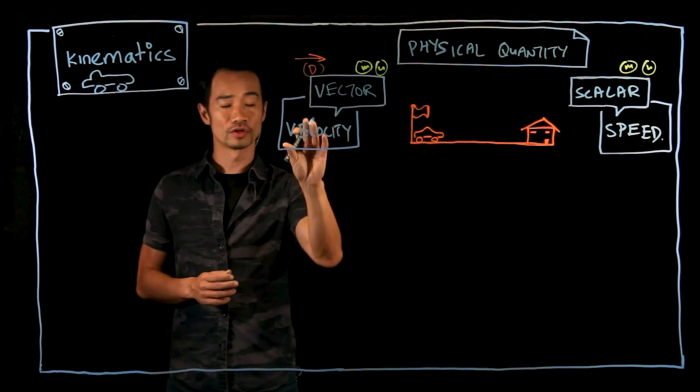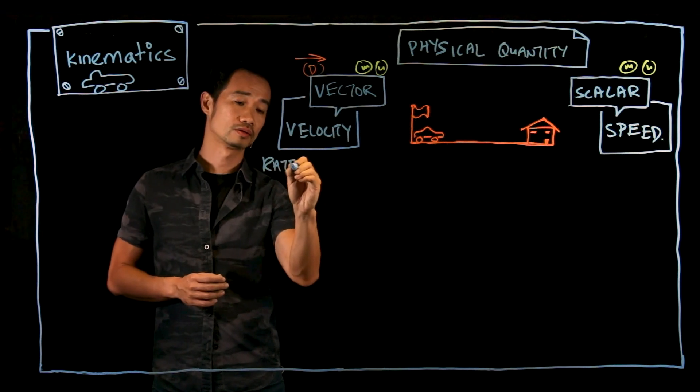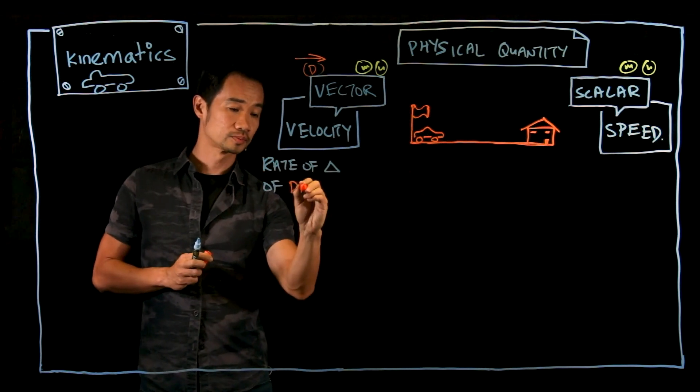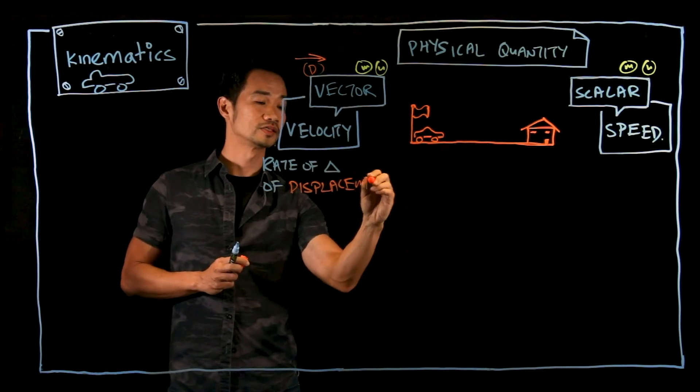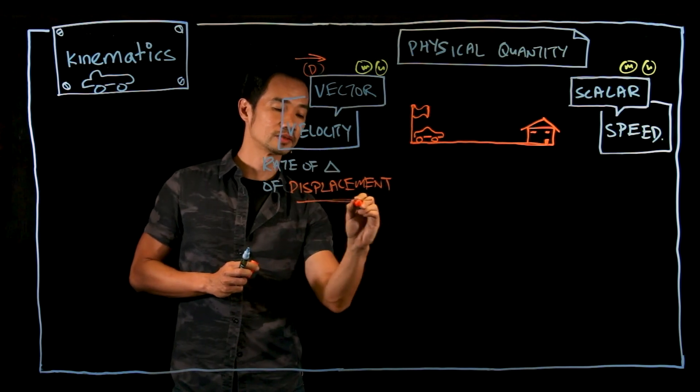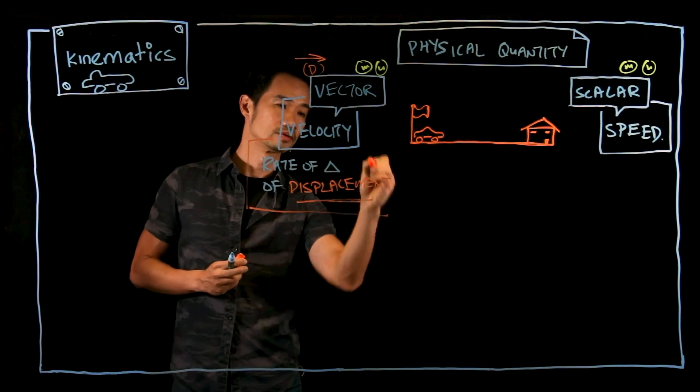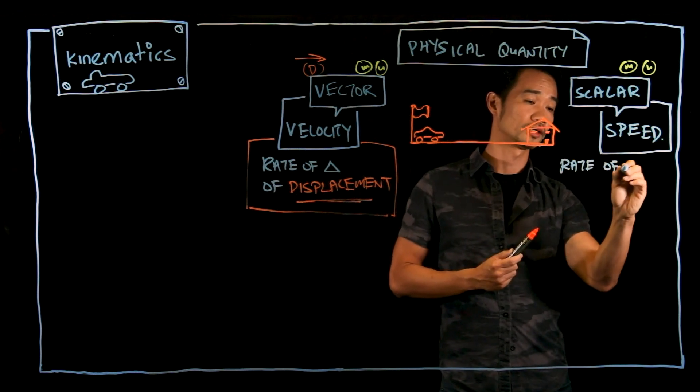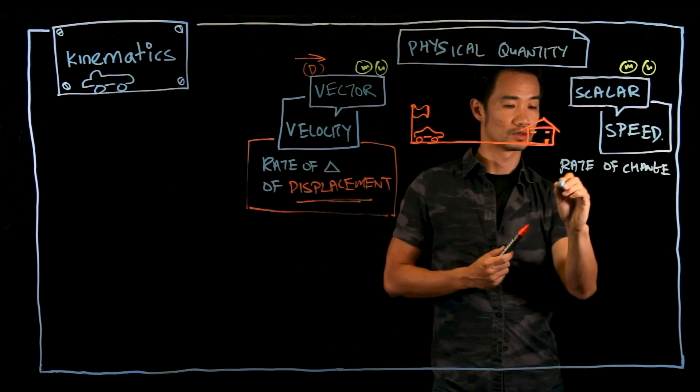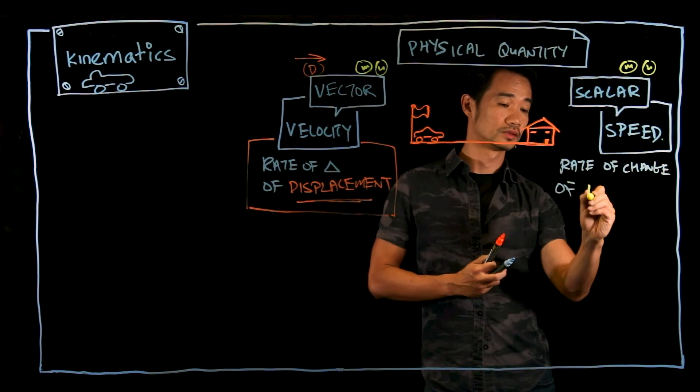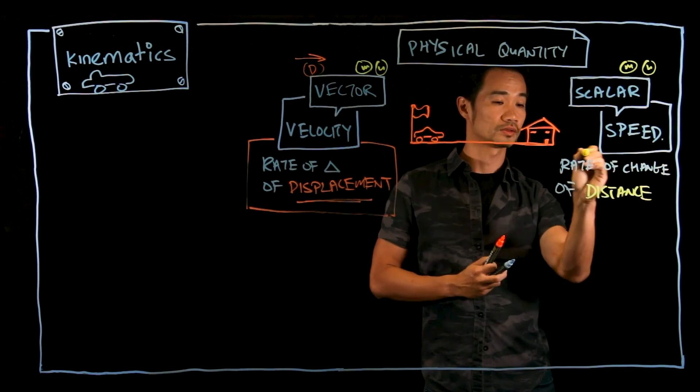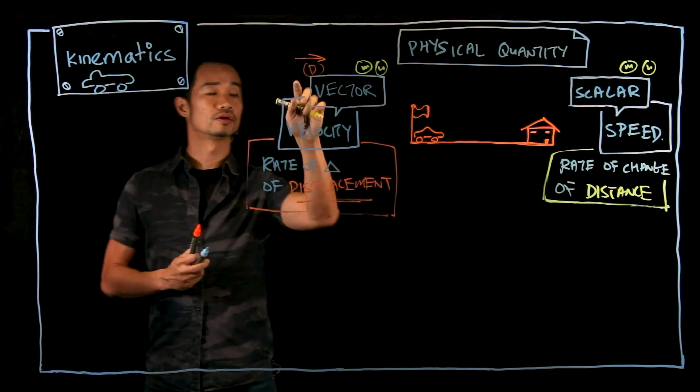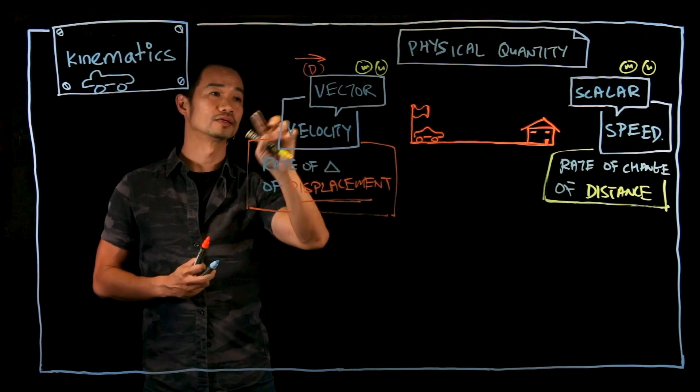Let's go through a little bit of definitions first. So velocity is rate of change of displacement. You still remember displacement? We just covered this term in the previous video. Displacement is simply distance in a specific direction. And speed is rate of change of distance. And because displacement has the notion or factor of direction, velocity then is a vector quantity.